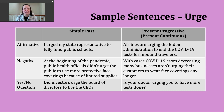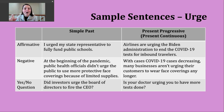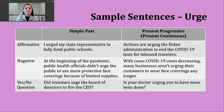Now let's switch gears and look at the present progressive. Sometimes you might hear your teachers or textbooks call this the present continuous — they mean the same thing. I like saying present progressive because it helps remember that we need two parts to make it in the affirmative. We use a present form of be — am if the subject is I, are if the subject is you, we, or they, and is if the subject is he, she, or it — then the -ing form of the verb. Here's an example: airlines are urging the Biden administration to end the COVID-19 tests for inbound travelers.